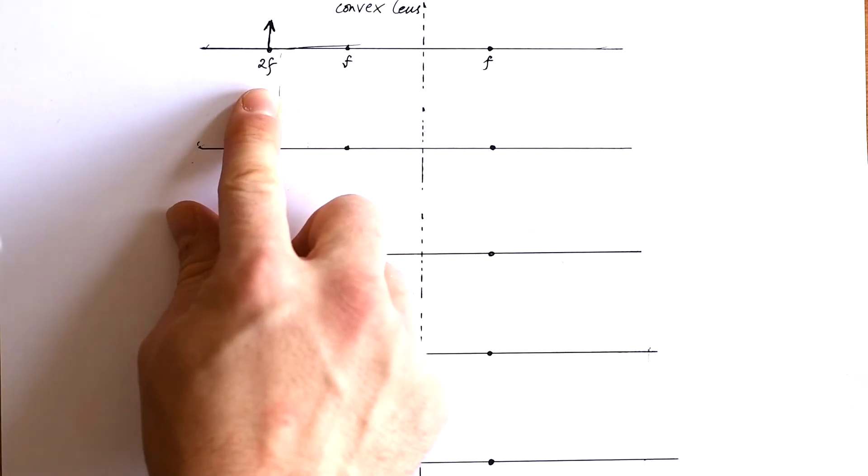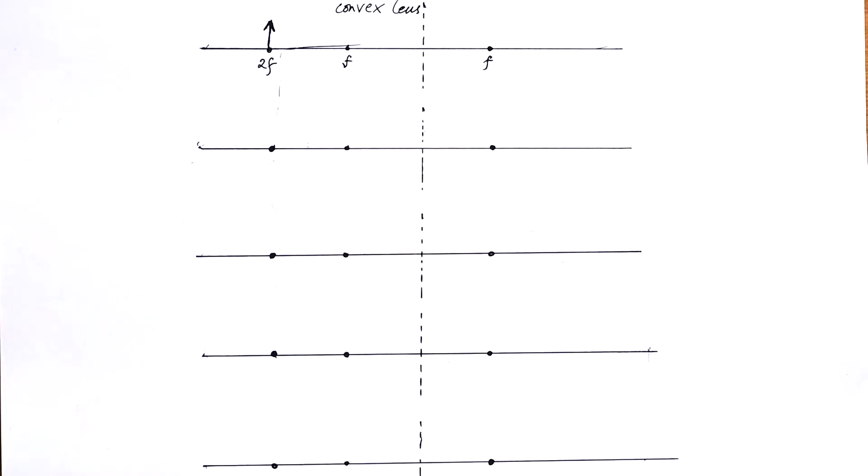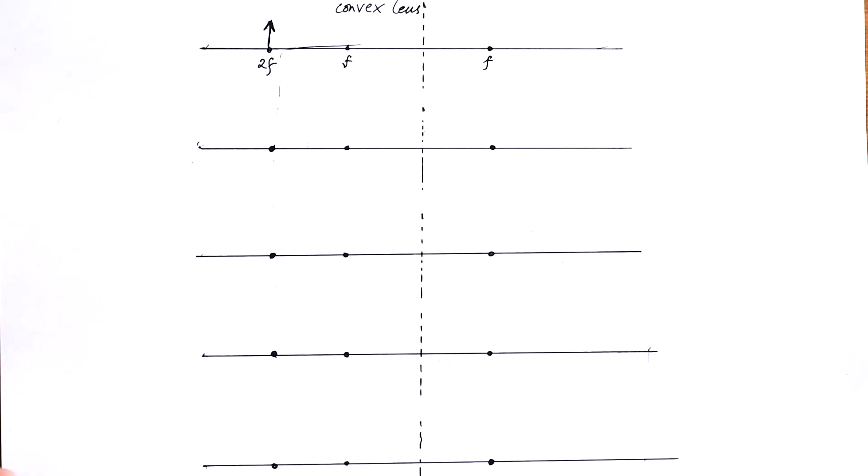We're going to mark two times the focal length. This is the focal length, this is the focal length, and this is double the focal length. So where is the light from the tip of this arrow going to end up?